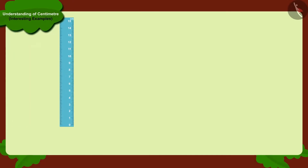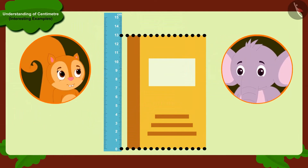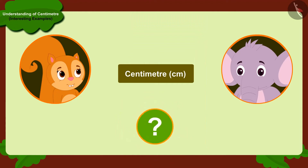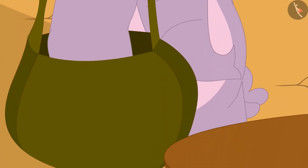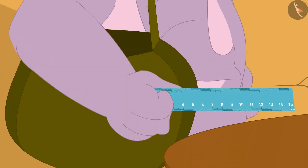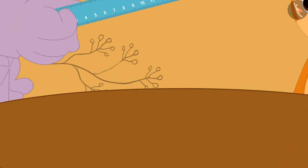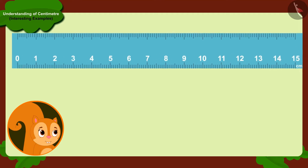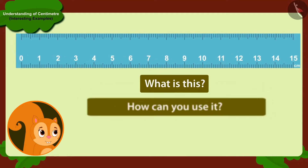Do you remember, kids? In the previous video, Appu told Chanda about centimeters. Appu took out a plastic strip like this from his bag and placed it on the table in front of Chanda. Chanda asks him, what is this plastic strip and how can I use it to measure the length of objects in centimeters?